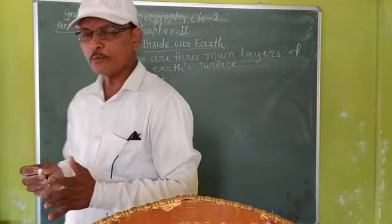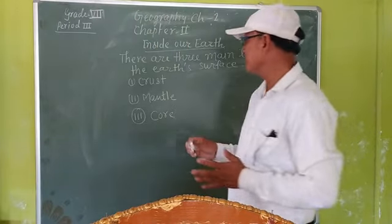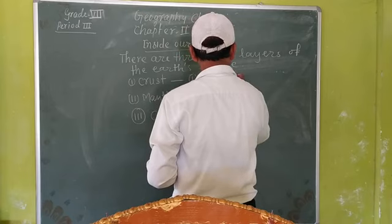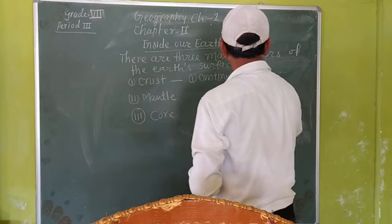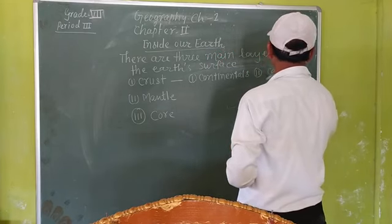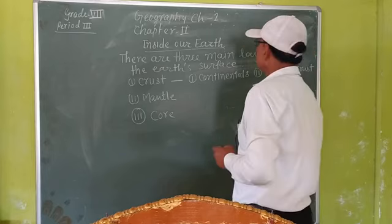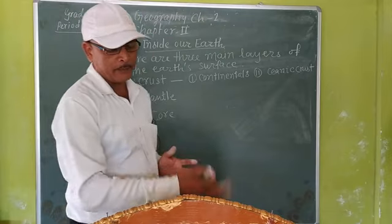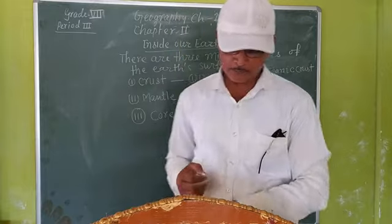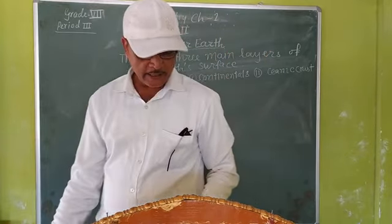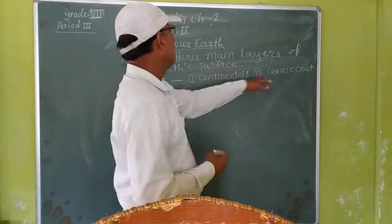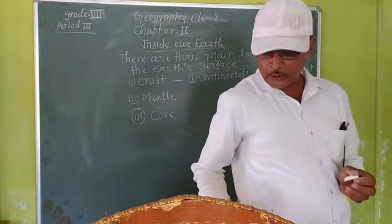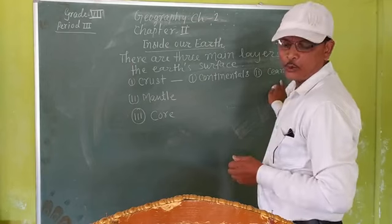There are two types of crust: continental crust and oceanic crust. Continental crust is rich in silicon and aluminum, that is why it is known as SIAL. Oceanic crust is also known as SIMA.